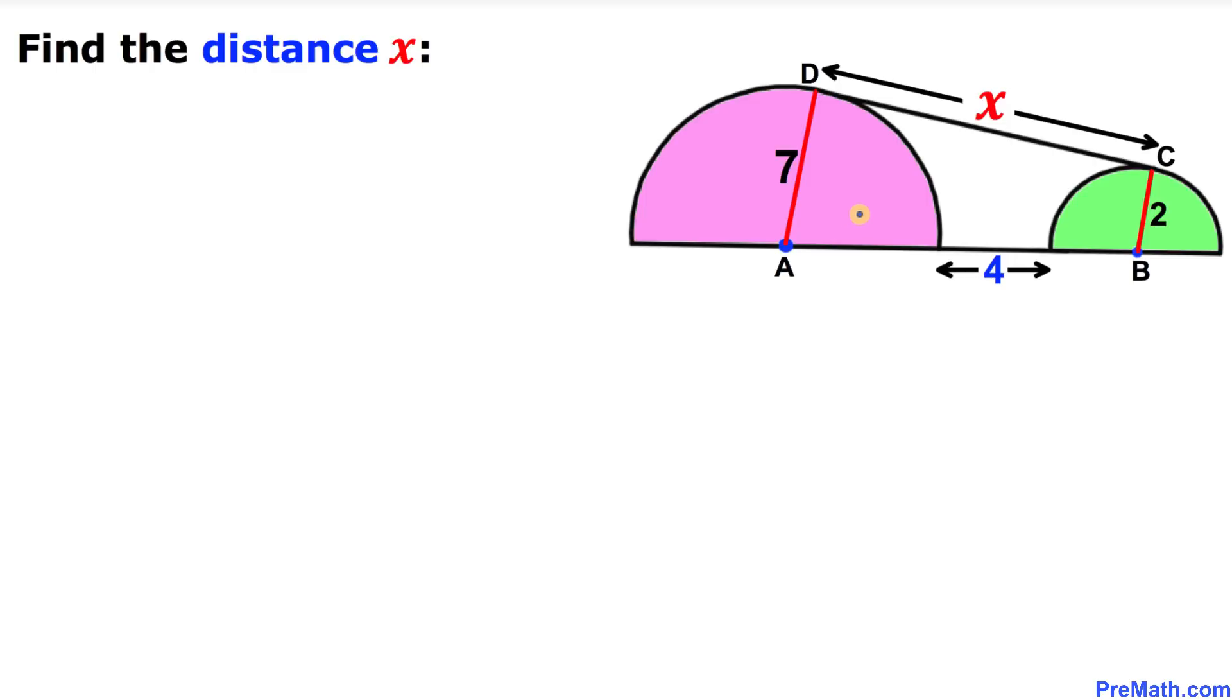Moreover, the distance between these two semicircles is 4 units. And now we are going to calculate the distance x between these two points of tangencies C and D.